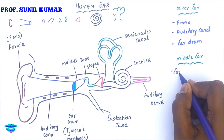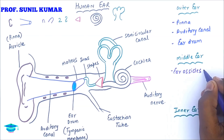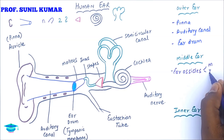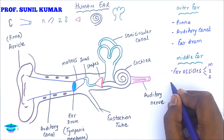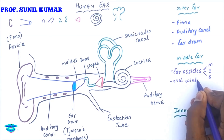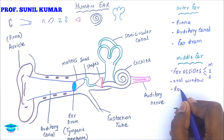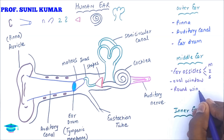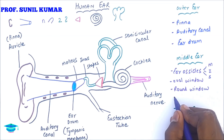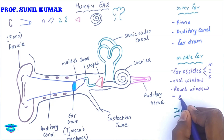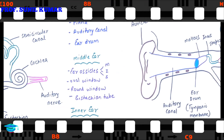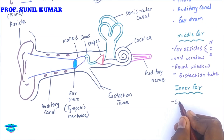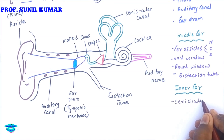The middle ear includes the ear ossicles — malleus, incus, and stapes — the three smallest bones of the body, with stapes being the smallest. It also has the oval window (between the stapes and inner ear), the round window (connecting middle and inner ear), and the eustachian tube, which equalizes air pressure and connects to the pharynx.